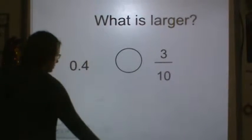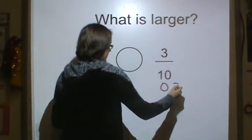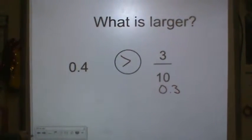So, all I have to do is convert this fraction into a decimal. So 3 tenths is the same as 3 tenths, right? That's how we write it. And we know that 4 tenths is bigger than 3 tenths.